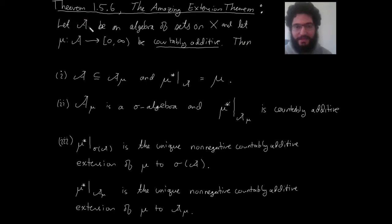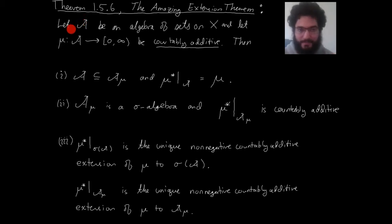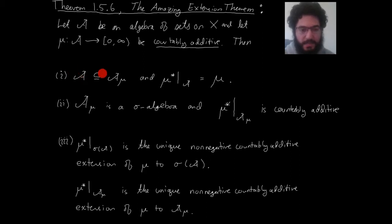That's the main thing to remember. Further, that unique extension is the outer measure mu star. Now let's go through more carefully. First, A is going to be contained in the set of mu-measurable sets, A_mu. And if you look at the outer measure mu star, then that is an extension of mu. That's not always true — mu star being an extension of mu requires these hypotheses.